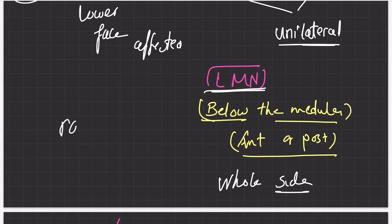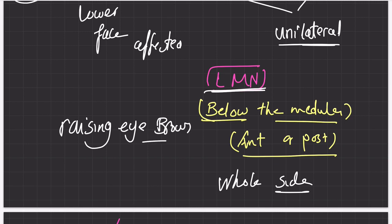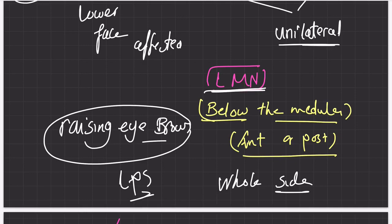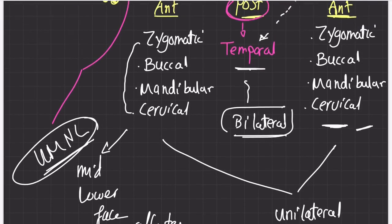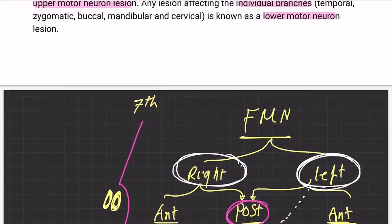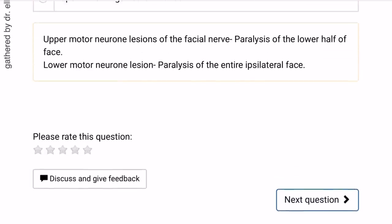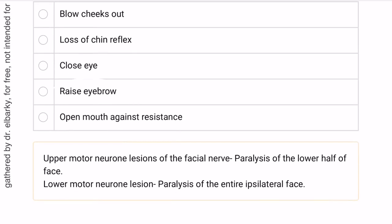The most important clinical sign to distinguish upper motor neuron from lower motor neuron facial nerve lesions is raising the eyebrow. The temporal nerve controls the levator function for the upper face, so if a patient can raise their eyebrow, it suggests an upper motor neuron lesion; if they cannot, it suggests a lower motor neuron lesion.